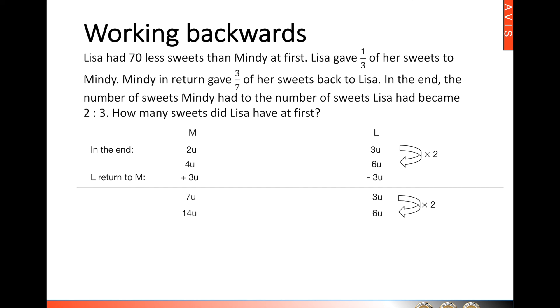Now Lisa would take back a 1/3, which is 3 units from Mindy, which gives us the initial ratio of 11 is to 9.